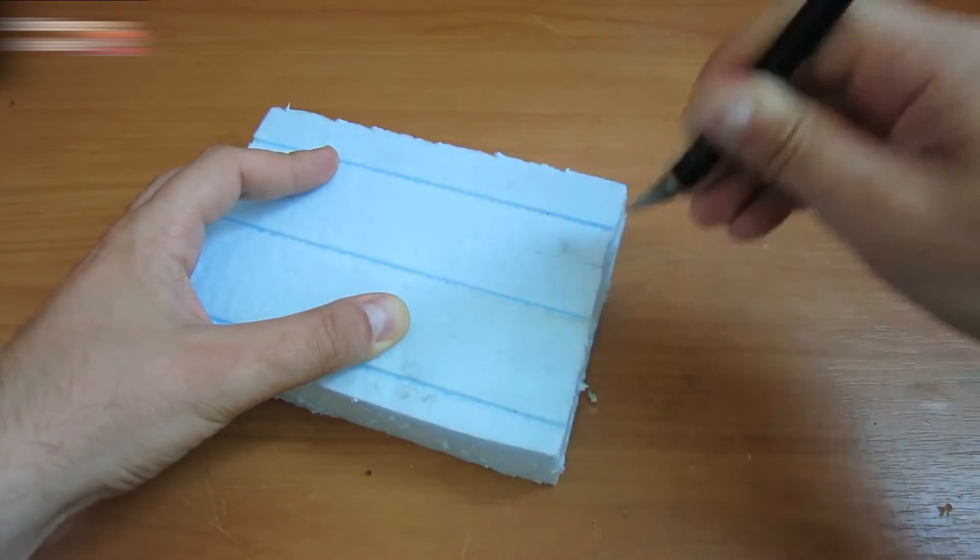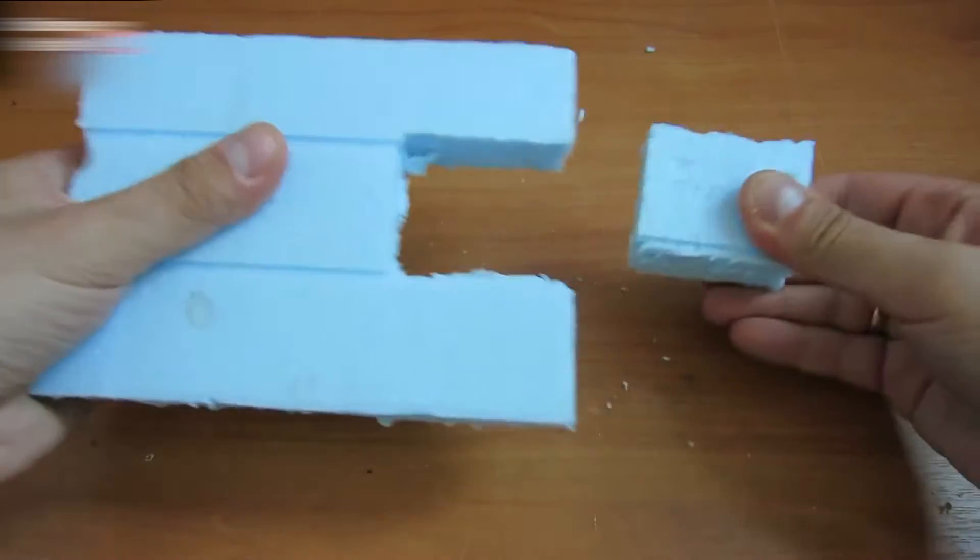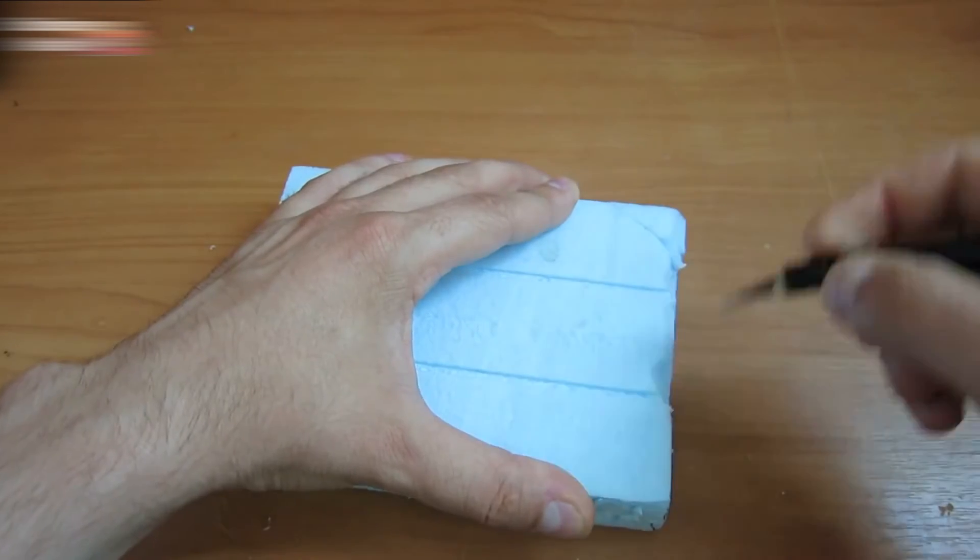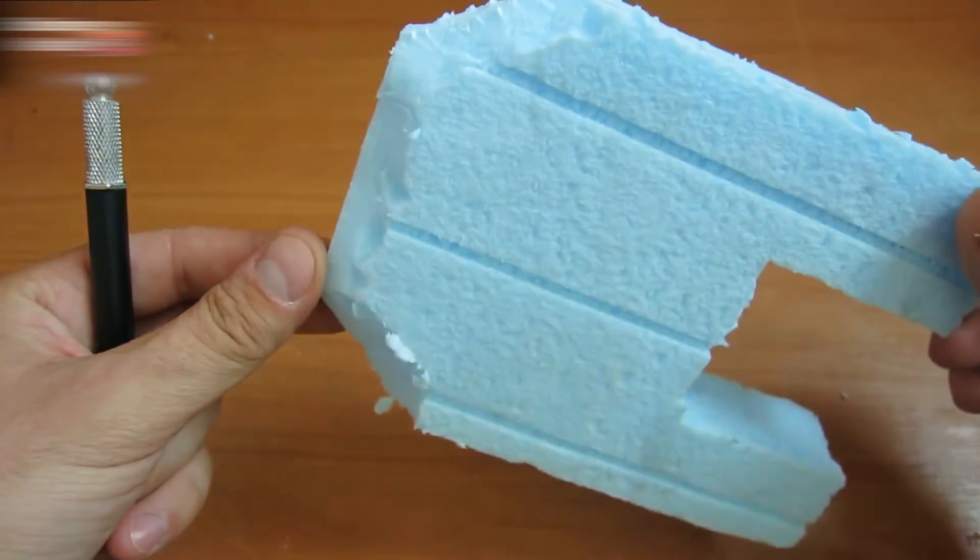Cut out a small piece of styrofoam. Cut the corners like this. It looks this way.